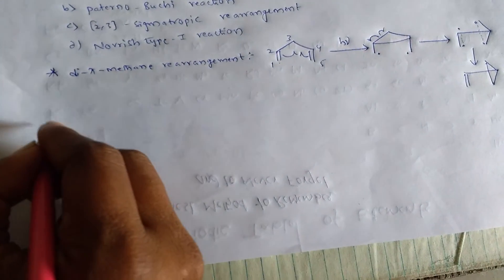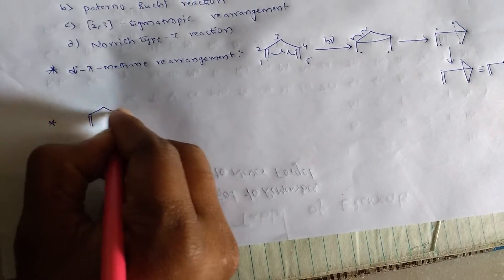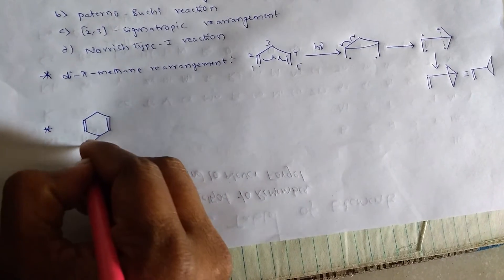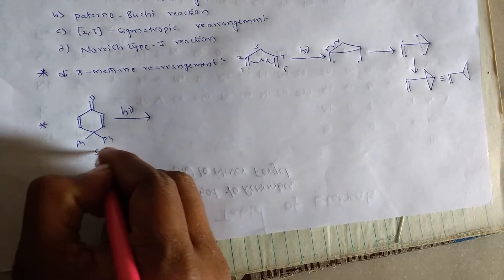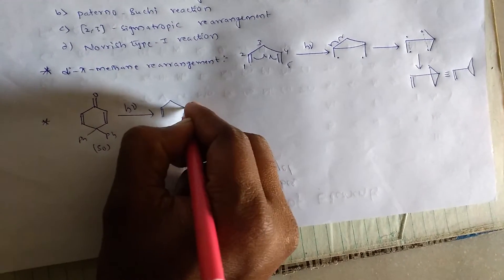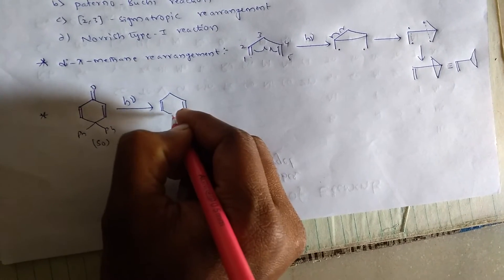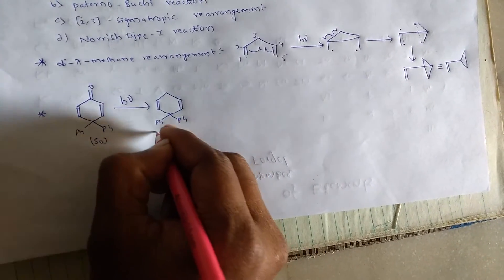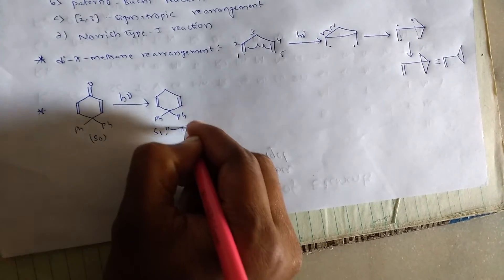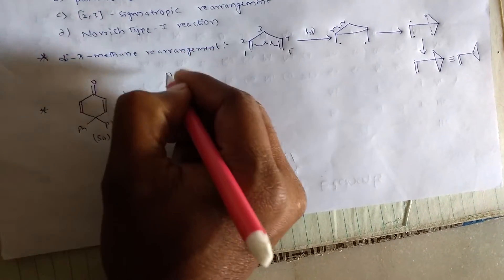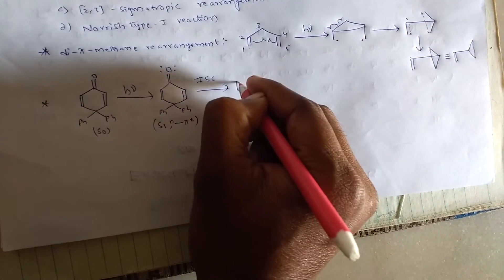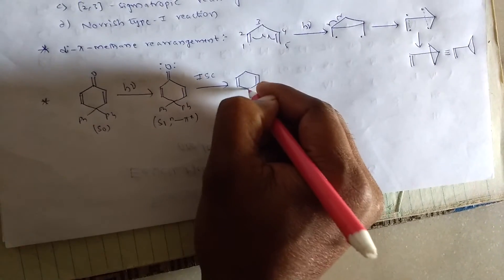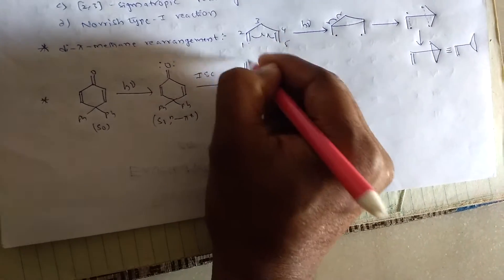If you observe for this problem, under photochemical conditions, from S0 it is excited to singlet state, N2-pi-star. And on inter-system crossing, it becomes the triplet state.